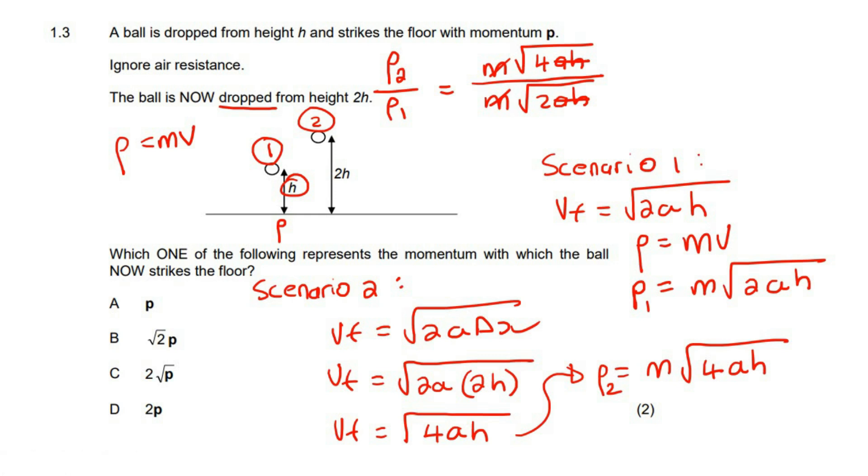So what we are now left with is that p2 over p1 is just going to be square root 4 over square root 2, which is just square root 2. So we can see then that p2 divided by p1 is going to be square root 2. What that means is that p2 is going to be square root 2 times larger than p1.